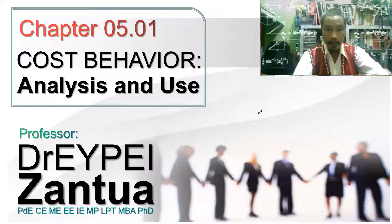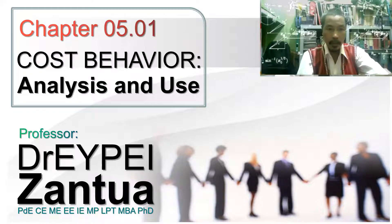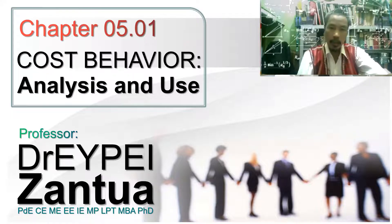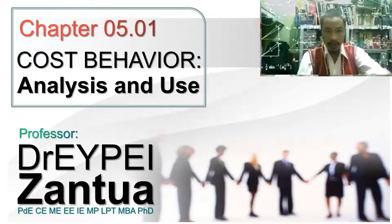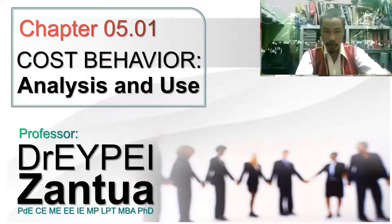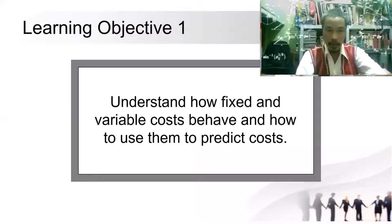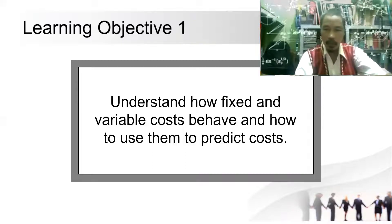In this video, we will go to the next chapter, Chapter 5, titled 'Cost Behavior Analysis and Use.' There are several chapters where we tackle different cost system designs. Now we will analyze and use these cost systems regarding their behavior. Our first module has the learning goal to understand how fixed and variable costs behave and how to use them to predict cost.